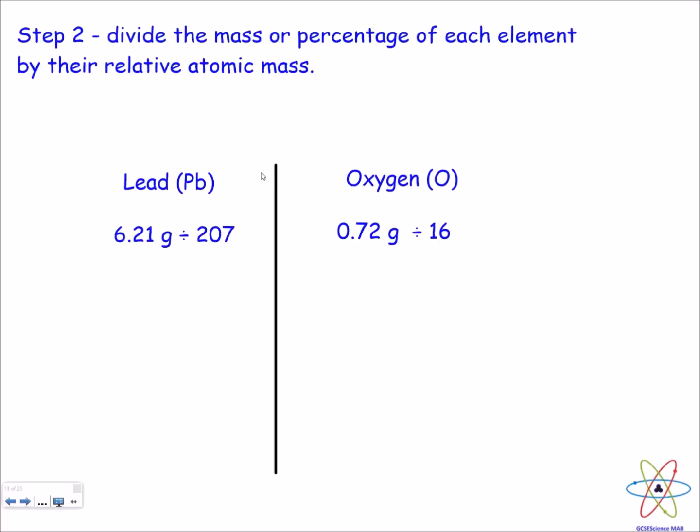So for step two we've got to divide the mass or the percentage, but in this case we've got mass of each element by their relative atomic mass. So we've got 6.21 grams of lead divided by 207 which is the relative atomic mass of lead. Then you've got to do the exact same thing for oxygen.